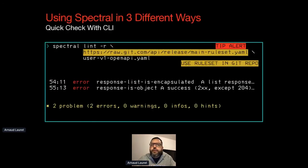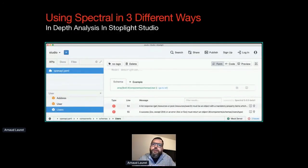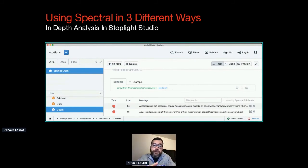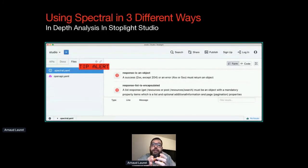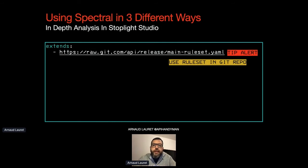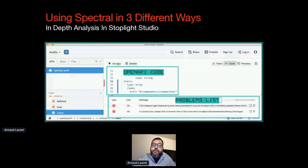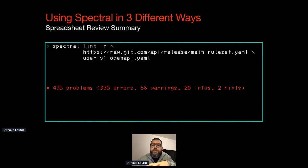I use Spectral in three different ways. When I receive an API contract for review, I use the CLI to do a quick check and see how many problems there are. If I need to quickly go through all problems and jump from one problem source to another, I open the file in Stoplight Studio — a GUI with both OpenAPI and Spectral support. To make my rules available in Studio I just need to add a .spectral.yaml file in the project and reference my main rule set targeting the git repository.